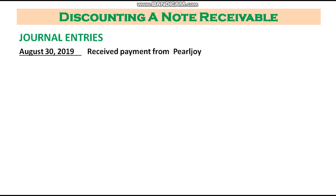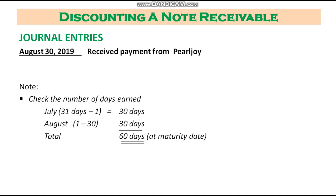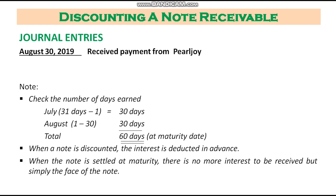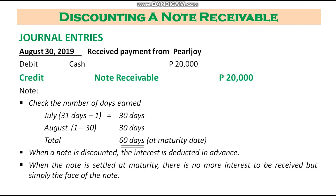On August 30, we received payment from Pearljoy. Again, check the number of days earned: July has 30 days, August has 30 days, total is 60 days — so Pearljoy paid at maturity. When a note is discounted, the interest is deducted in advance, so when the note is settled at maturity there is no more interest to be received — just the face of the note. Entry: debit cash 20,000, credit notes receivable 20,000.